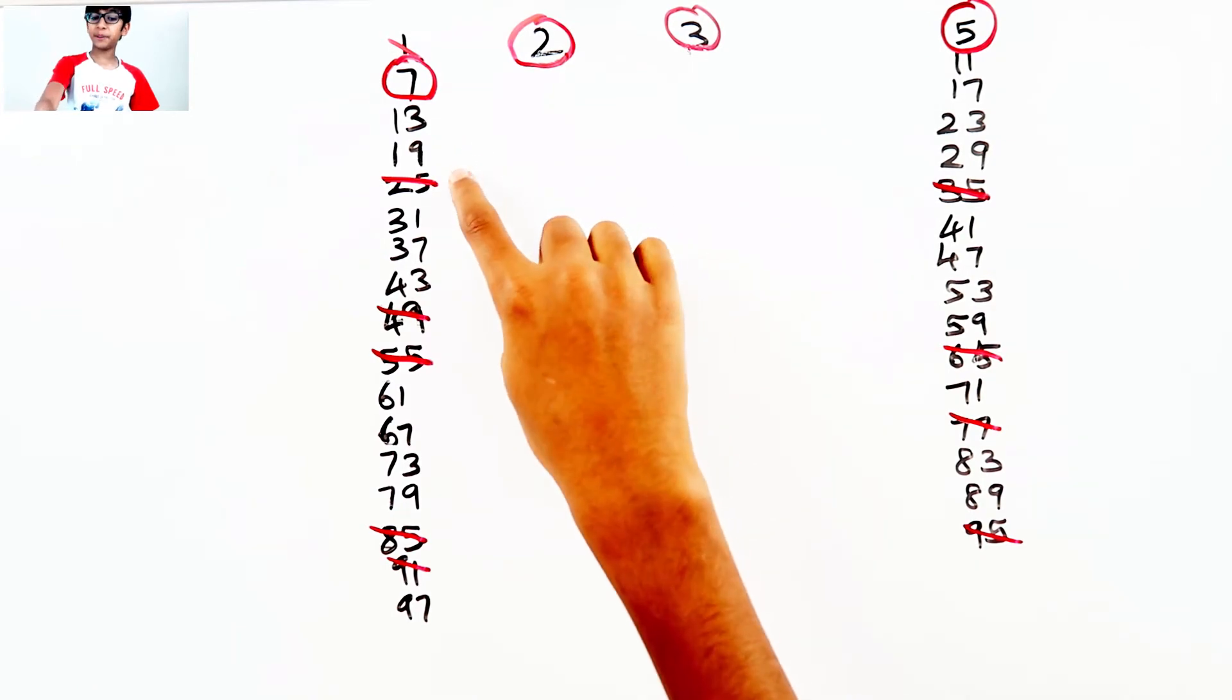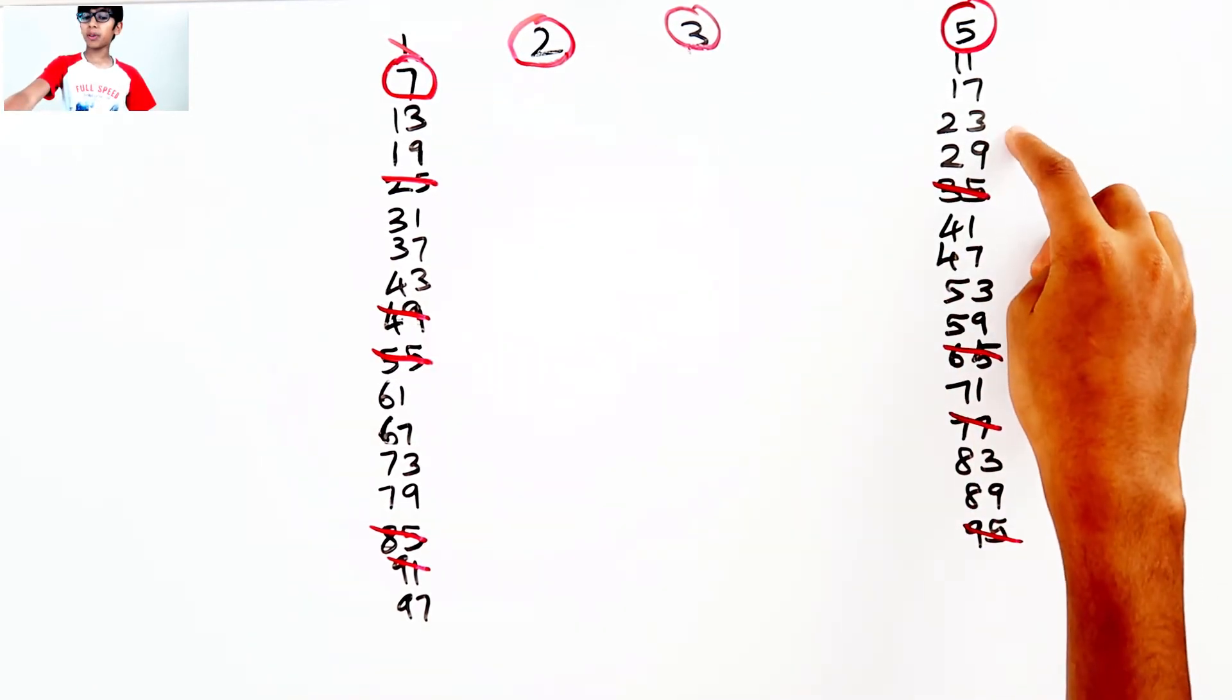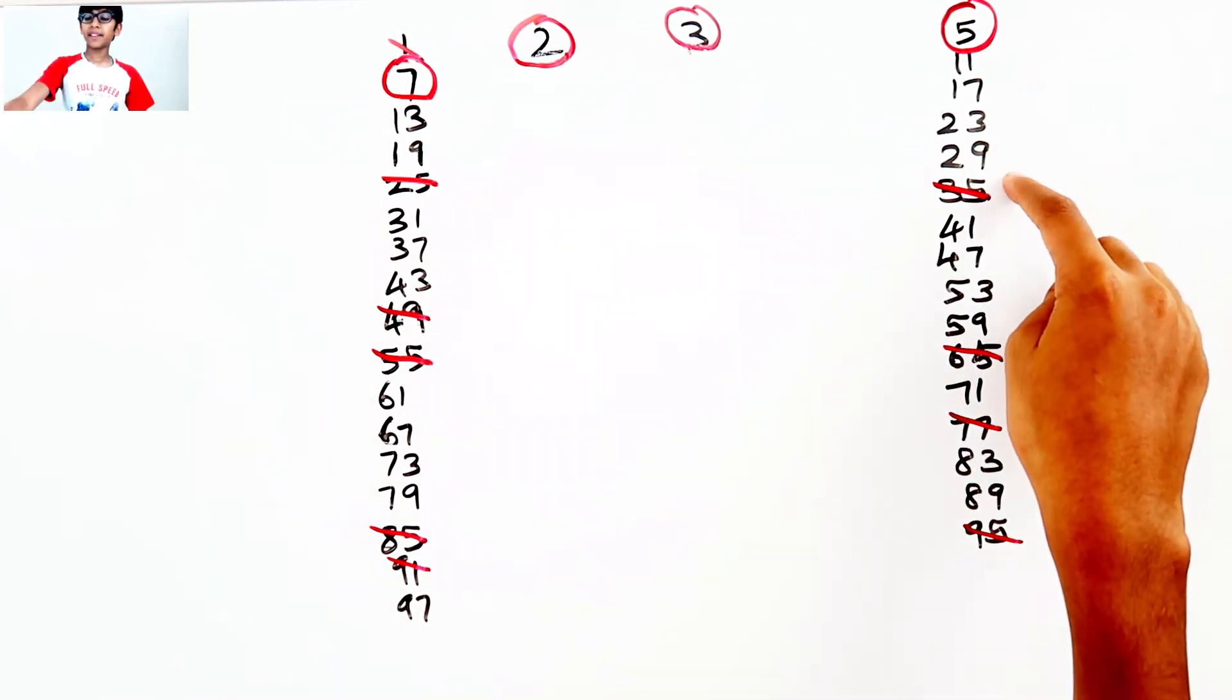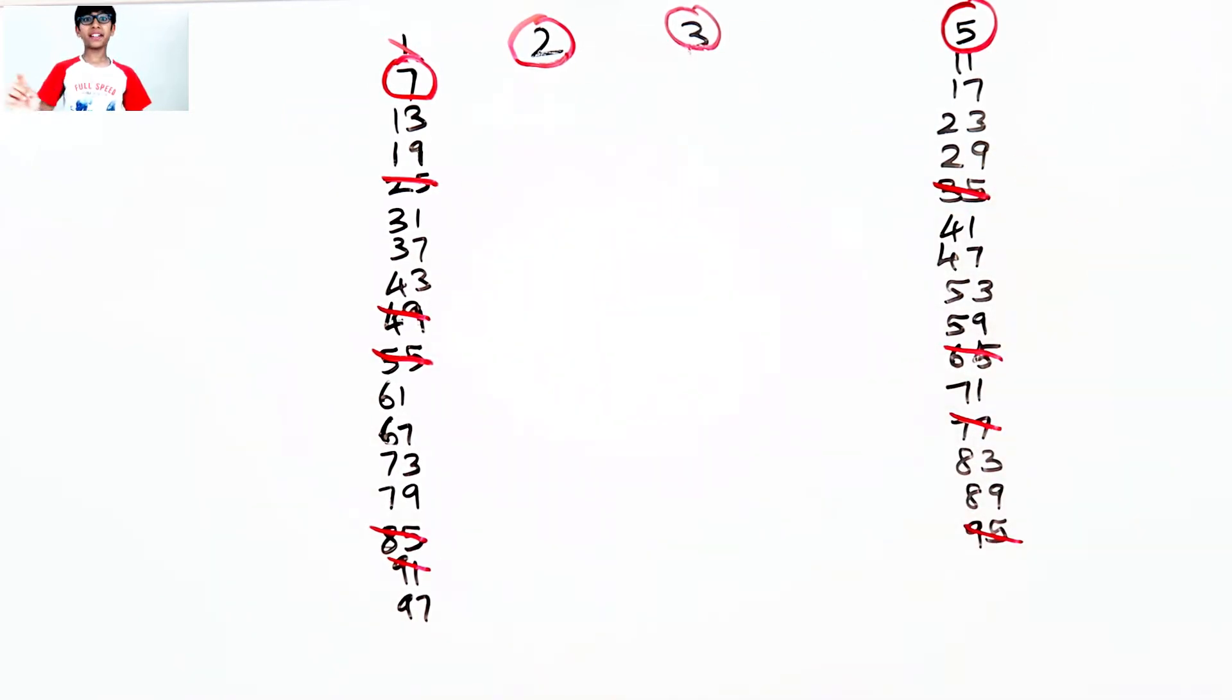Then I add 2, 19. Then I add 4, 23. Then I add 2, 25. Then I add 4, 29. Do you get it? It's a pattern!